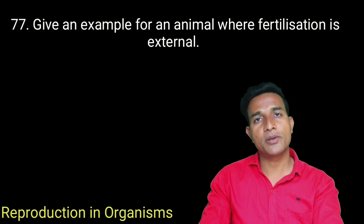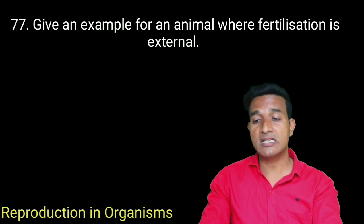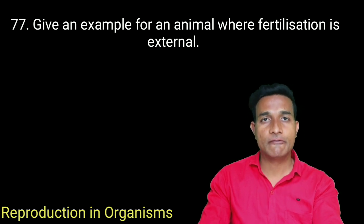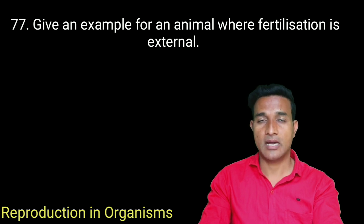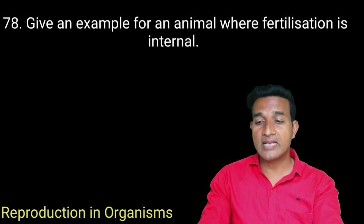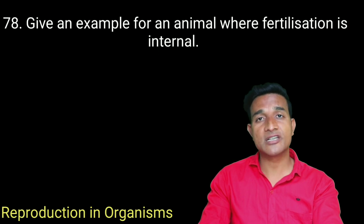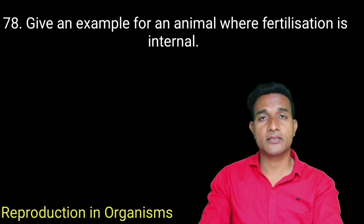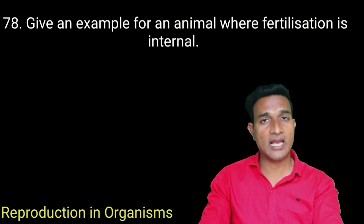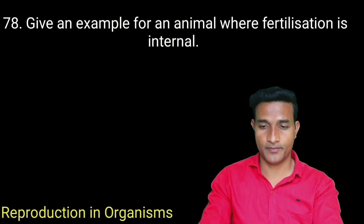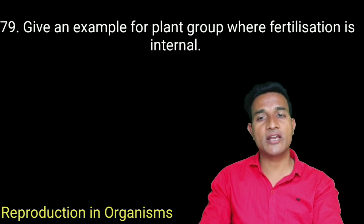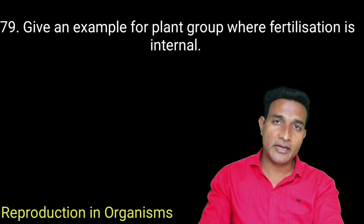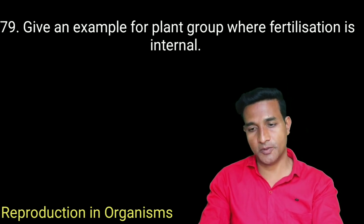Give an example for an animal where fertilization is external — algae, fishes, and amphibians. Give examples for animals where fertilization is internal — fungi as well as animals such as reptiles, birds, and mammals. Give an example for a plant group where fertilization is internal — bryophytes, pteridophytes, gymnosperms, and angiosperms.